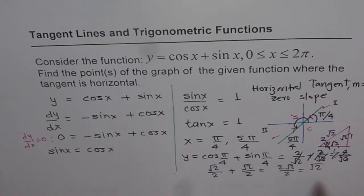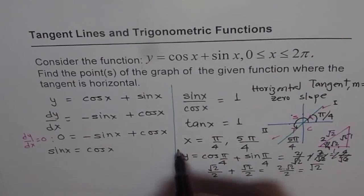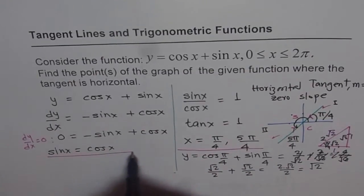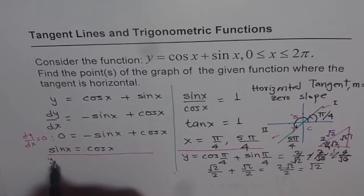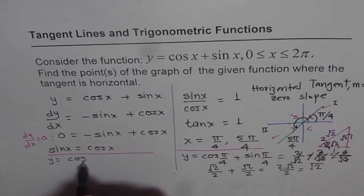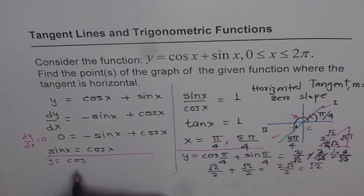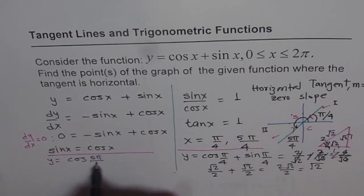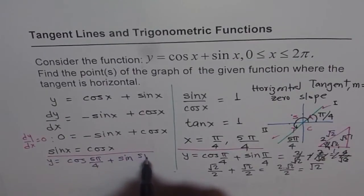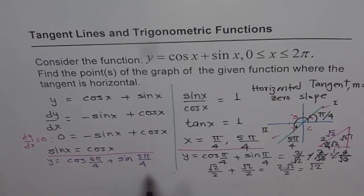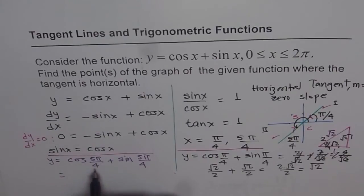How about the other point? Let's find out the other point. I'm running short of space here. We'll find the second point on this side. So we say y equals cos of 5π/4 plus sine 5π/4. Now, cos of 5π/4, it is in third quadrant.